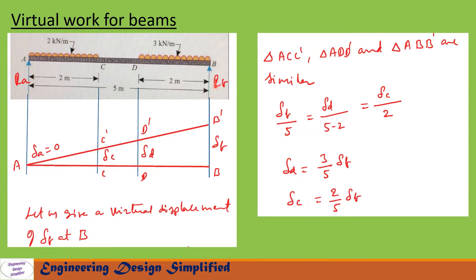To find reaction at B (R_B), give a virtual displacement of δB at B. The beam assumes position A-C'-D'-B'. Using similar triangles A-C-C', A-D-D', A-B-B', we get: δB/5 = δD/(5−2) = δC/2. From this: δD = (3/5)·δB, and δC = (2/5)·δB.